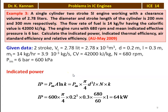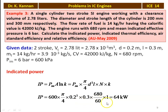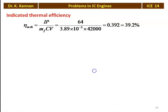For a two-stroke cycle engine, number of power strokes per revolution n = N. So IP = P_im × π/4 × d² × L × N/60 × k = 600 × π/4 × 0.2² × 0.3 × 680/60 × 1 = 64 kW. Indicated thermal efficiency = IP / (MF × CV) = 64 / (3.89 × 10⁻³ × 42,000) = 0.392 = 39.2%.